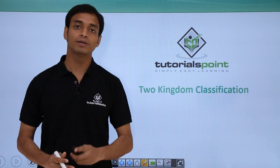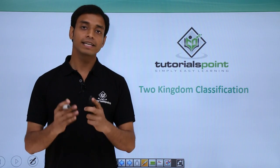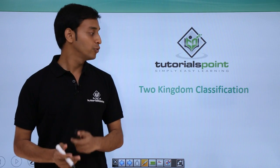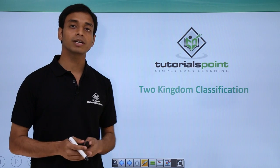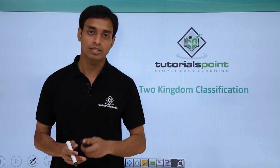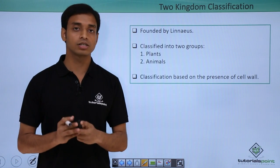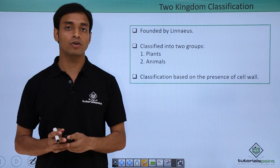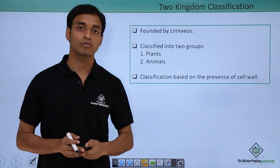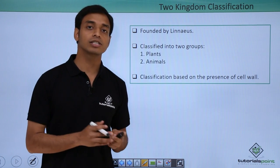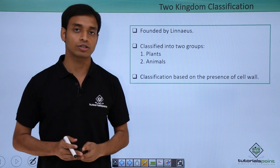Hello everyone, welcome to Tutorials Point. In this video we are going to talk about the two kingdom classification system. This is a type of classification system which was put forward by scientist Linnaeus. Linnaeus is also known as the father of taxonomy.